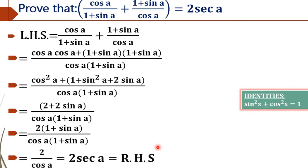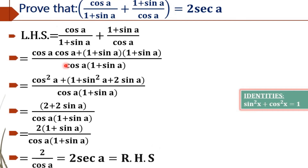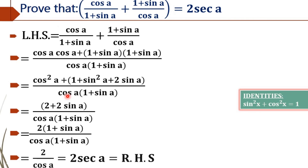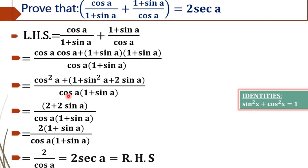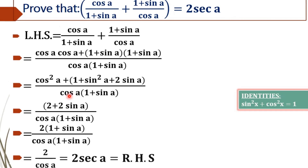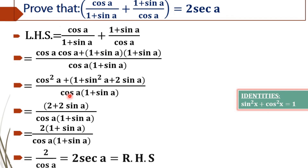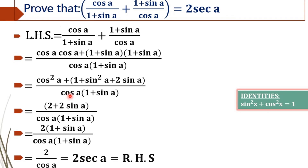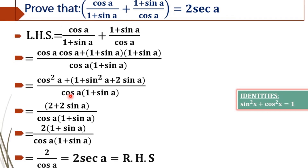What we have to do here is only to retain cos A until we get the result, since 2 sec A is the right hand side of the equation, we have to retain cos A until we get our result.